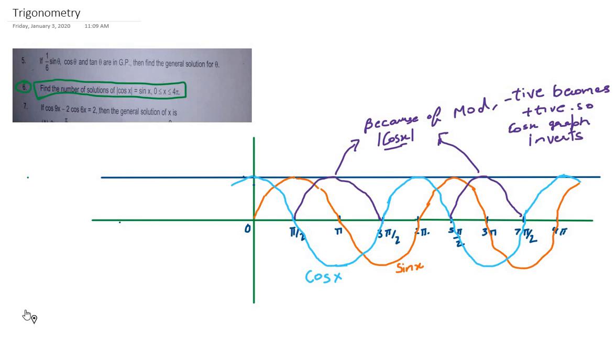Hello friends, let's look at the sixth problem. The problem is: find the number of solutions of |cos x| = sin x for 0 ≤ x ≤ 4π.